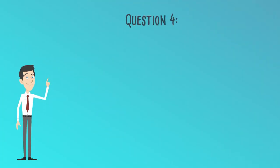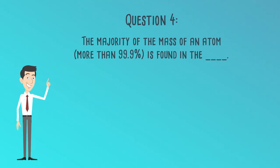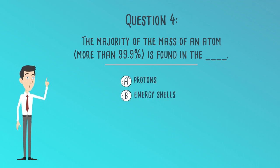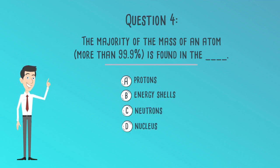Question 4. The majority of the mass of an atom, more than 99.9%, is found in the: A. Protons, B. Energy shells, C. Neutrons, or D. Nucleus.